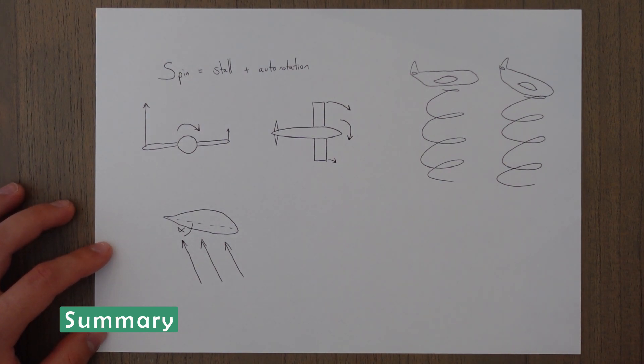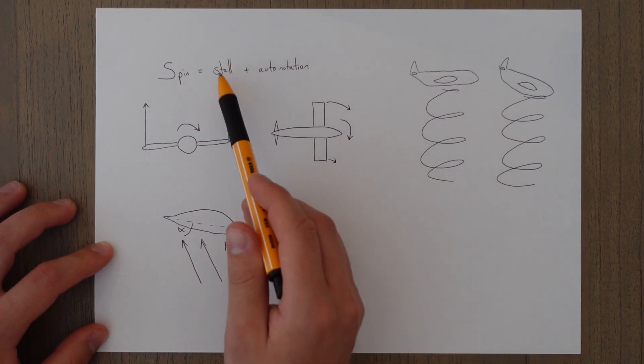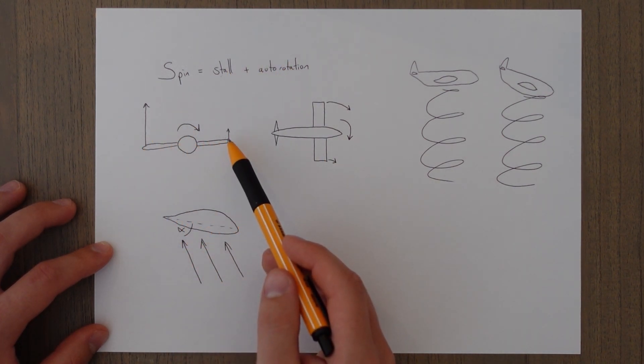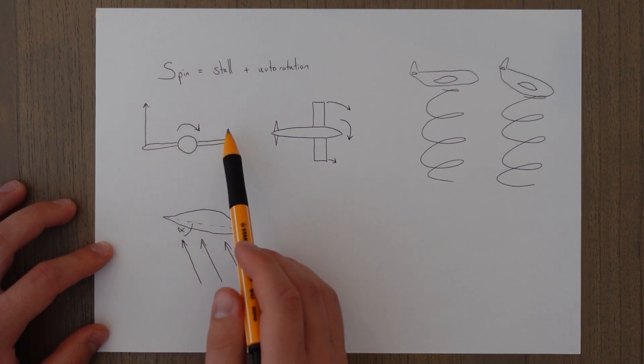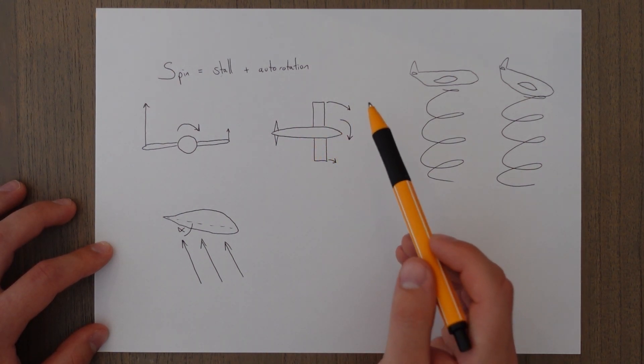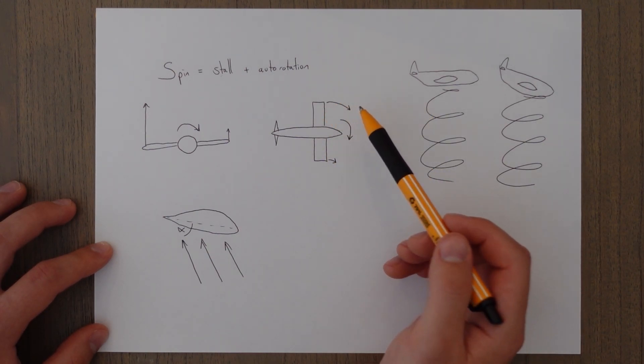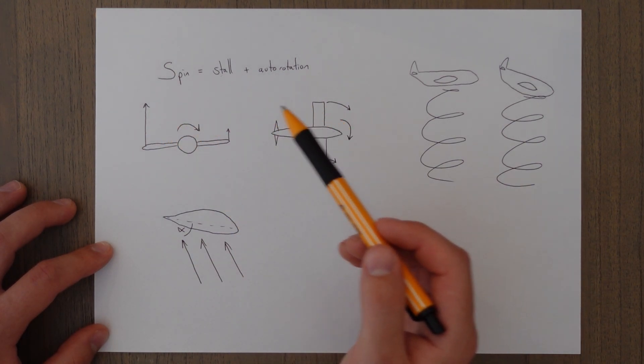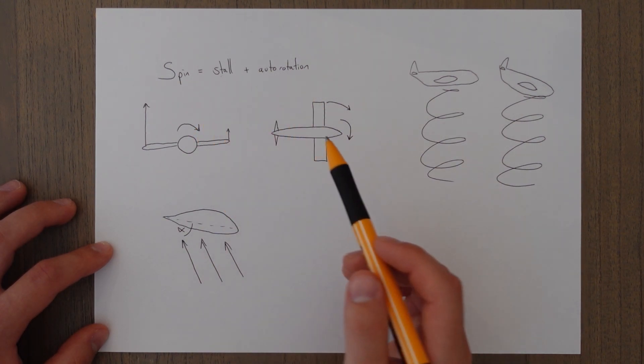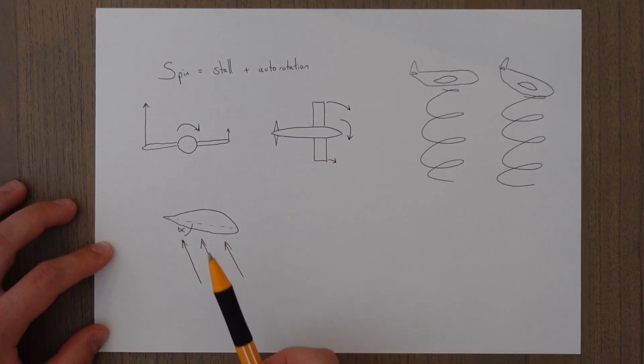So to quickly summarize then. An aircraft to spin needs to be stalled and needs to have auto rotation. We know what stalling is from the previous classes and auto rotation is when one wing stalls before the other and the unbalanced amounts of lift cause a rolling motion and then the secondary effect of yaw is felt and that means that one wing travels through the air faster and because it's traveling through faster produces more lift which causes this effect more which causes this effect more and the whole cycle continues. It self sustains without any pilot interaction.